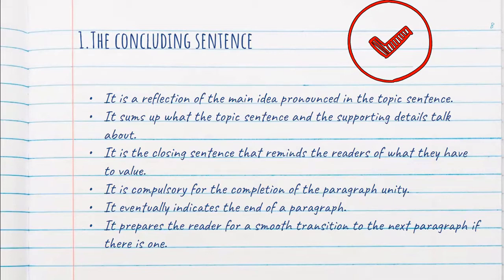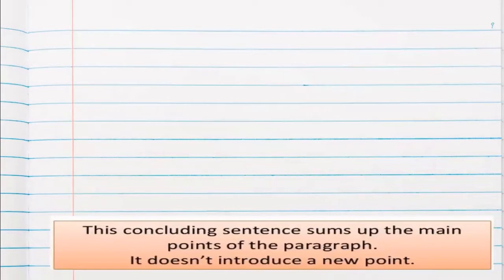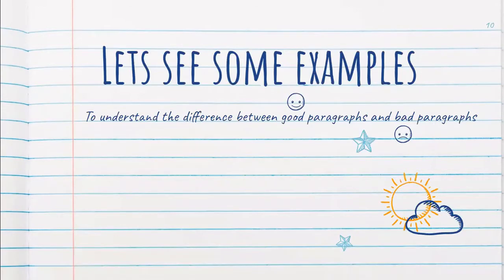Now, the closing sentence should remind the reader what your topic sentence was and how true it was. The concluding sentence is compulsory for the completion of paragraph unity — it indicates the end of the paragraph. If there is a next paragraph, it will also prepare the reader for a smooth transition between the two paragraphs. Importantly, the concluding sentence should not introduce a new point.